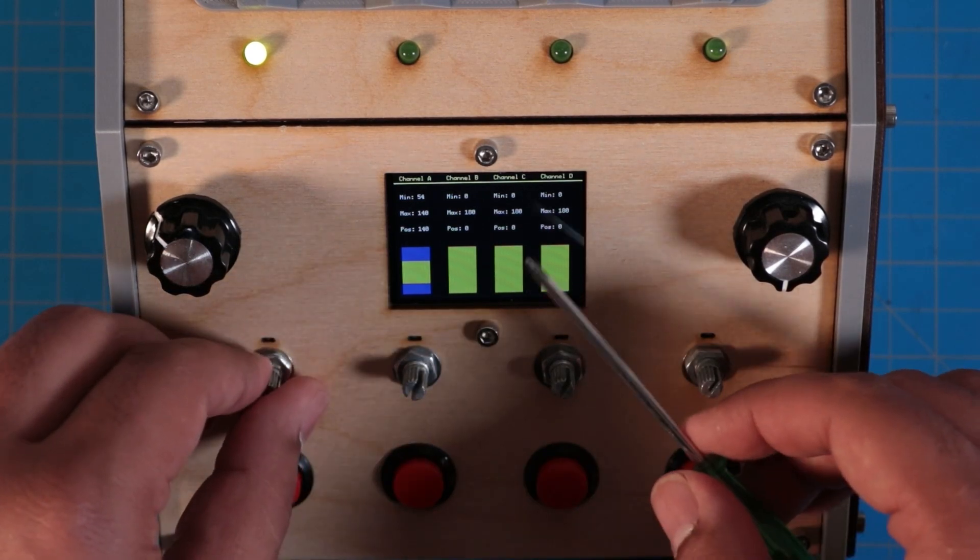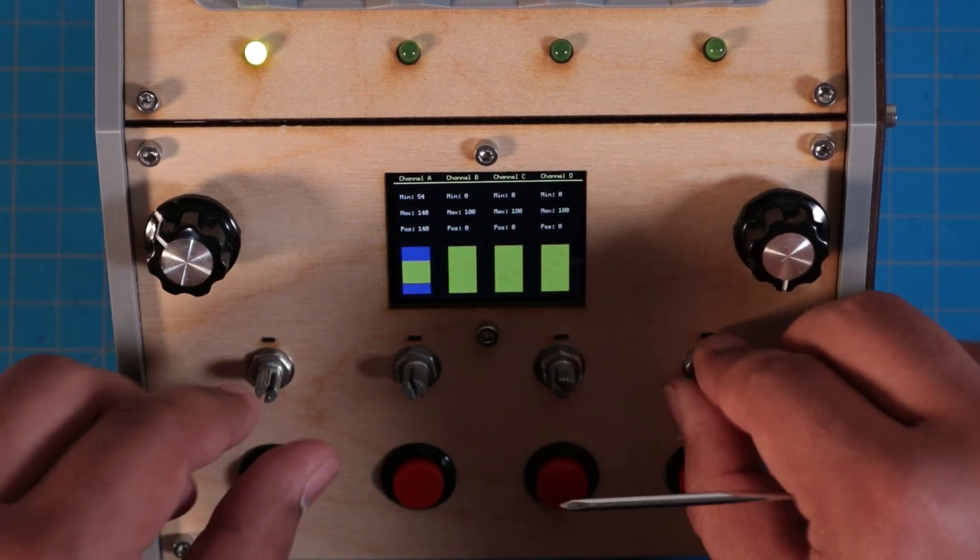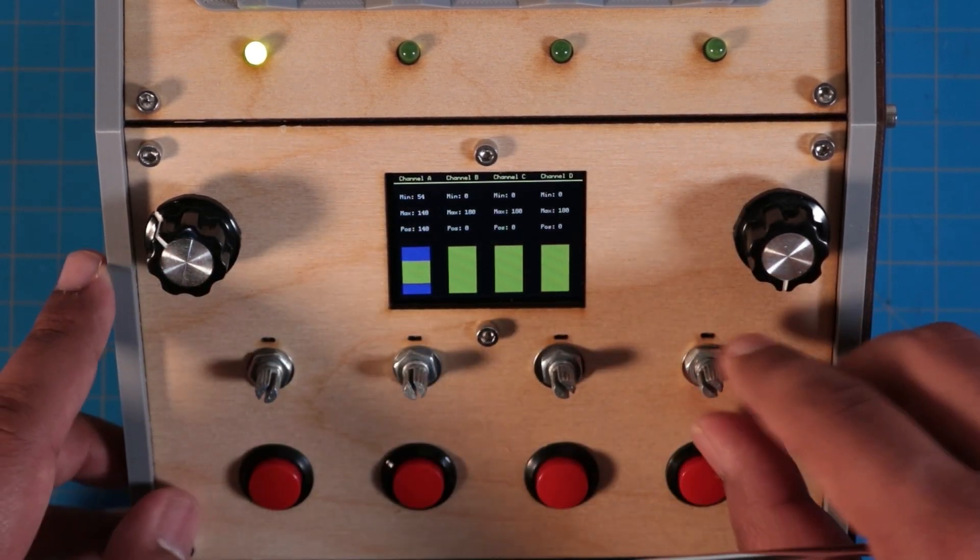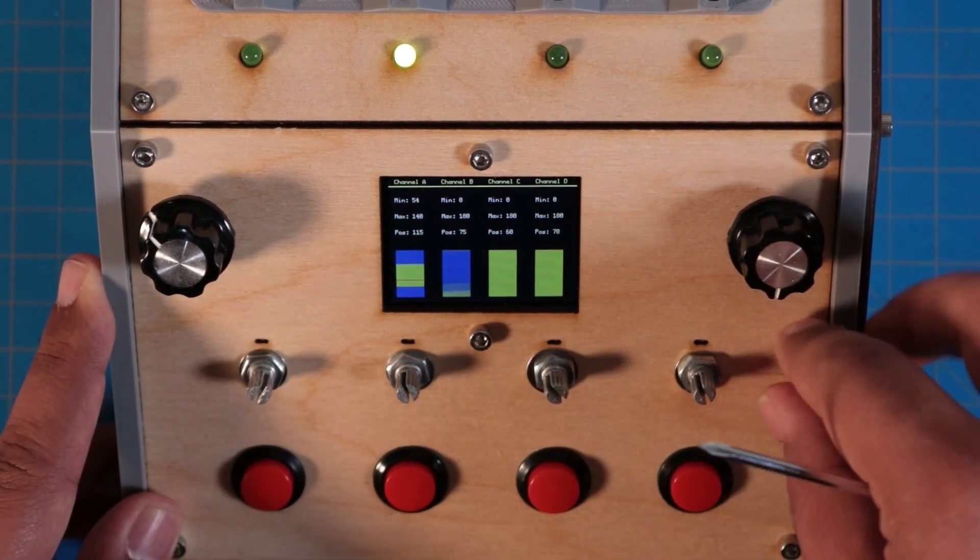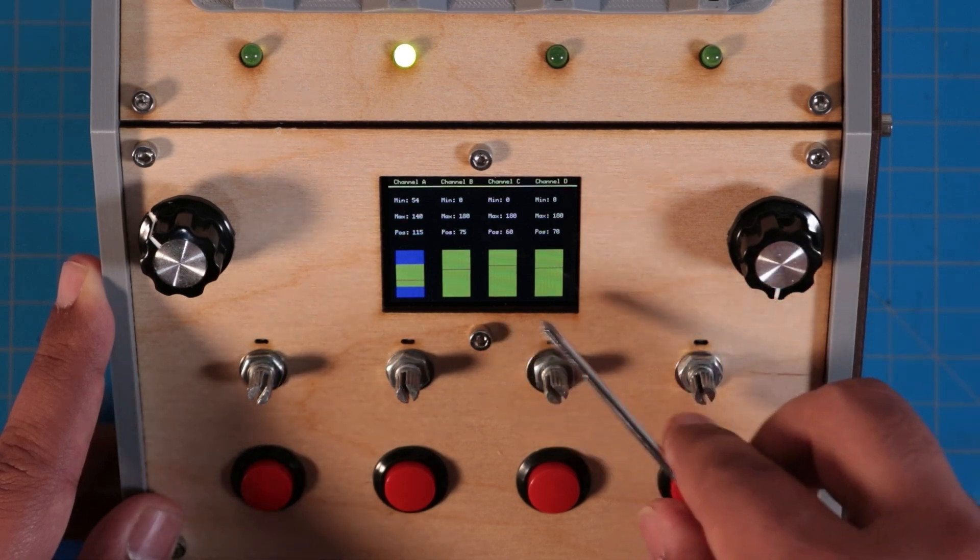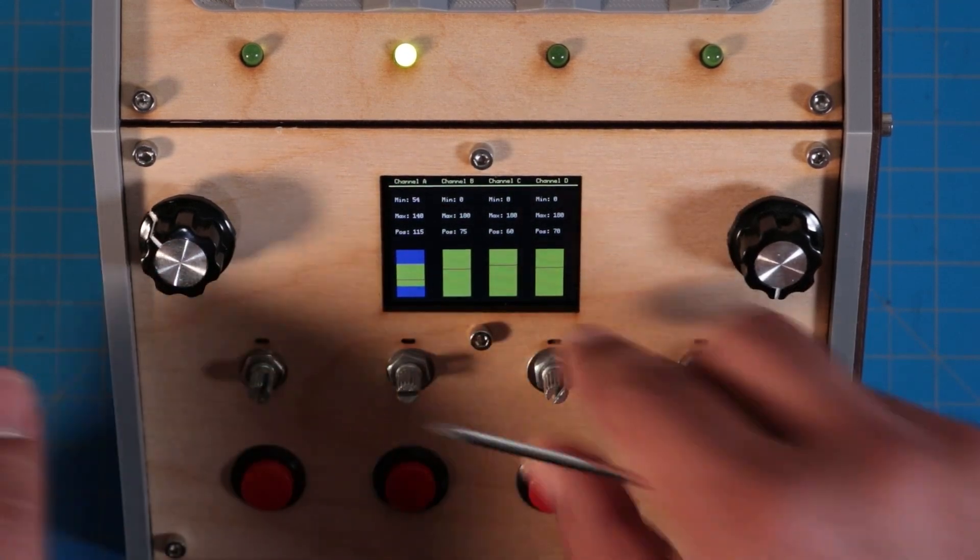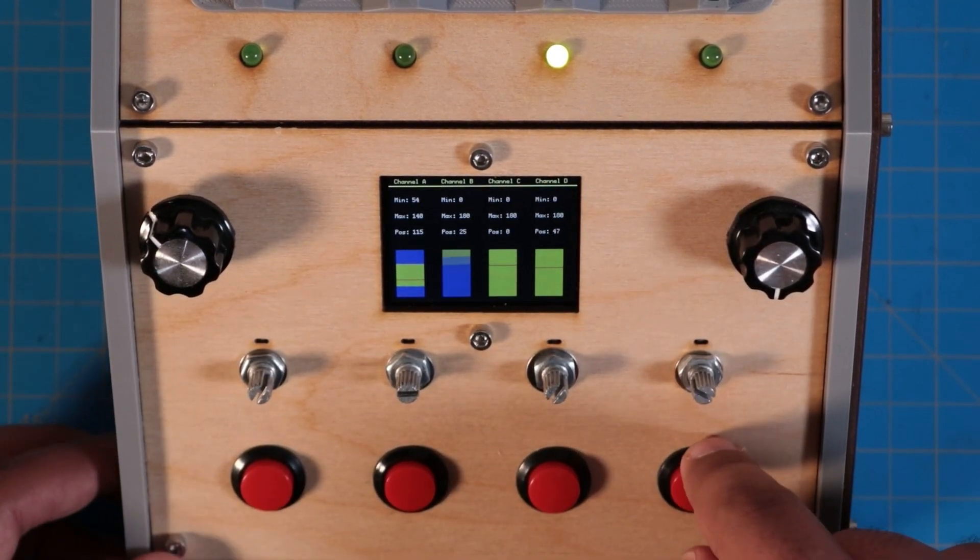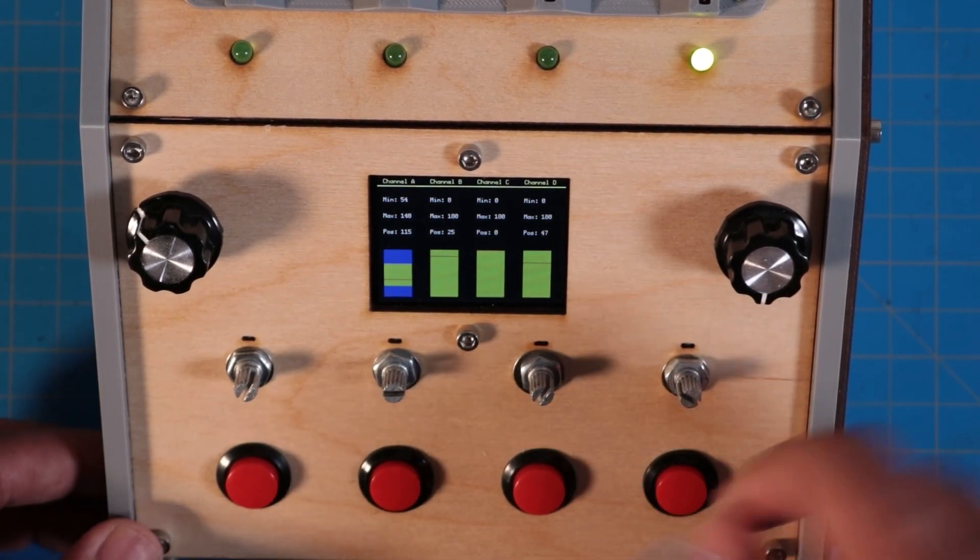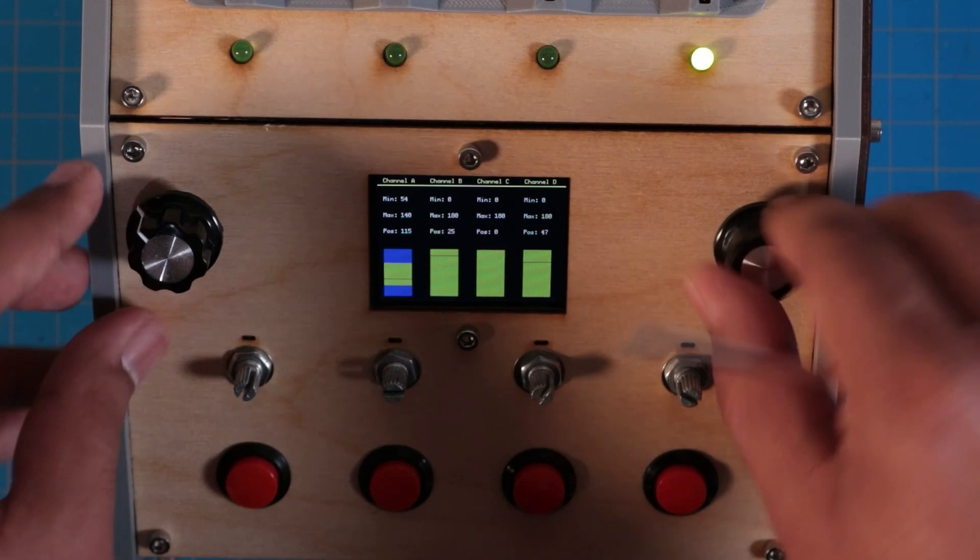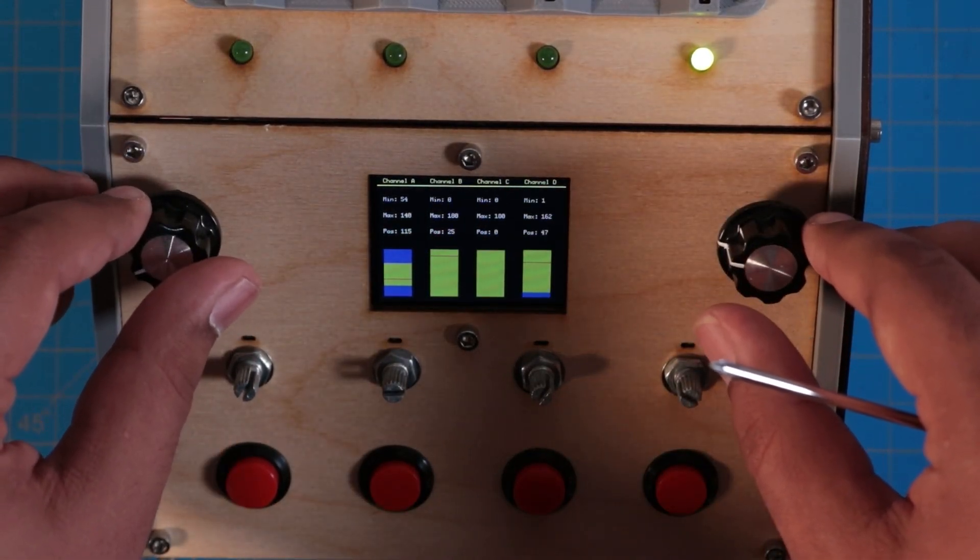But you can see that every time I change channels, we can see these new servo positions. Just channel 0, 1, 2, and 3 because computers start at 0, so I start at 0. And we can just adjust the limits for each of those channels.